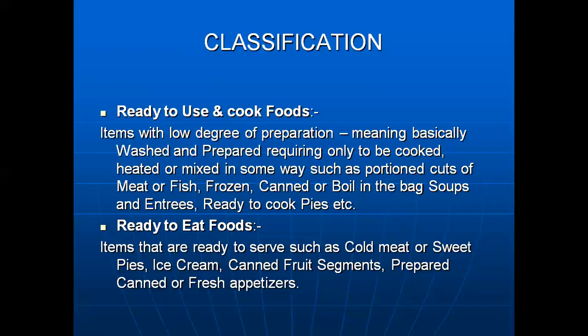The next classification is ready to eat food — items that are ready to serve such as cold meat, sweet pies, ice creams, canned fruit segments, prepared canned or fresh appetizers, which are straight away ready to eat, like chips. These are the ready to eat foods, which are very commonly used all over the world.